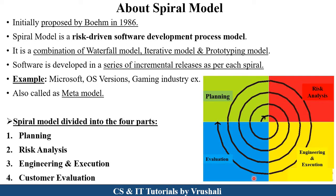Looking at the diagram, the spiral model is divided into four parts: first, planning; second, risk analysis; third, engineering and execution; and fourth, evaluation. Let's discuss each in detail.